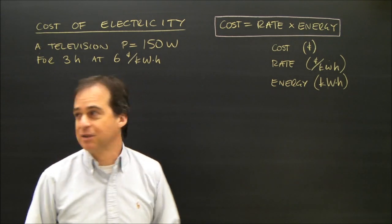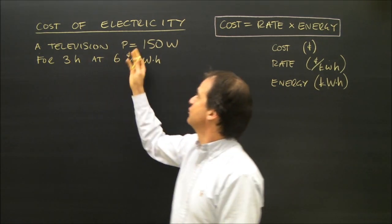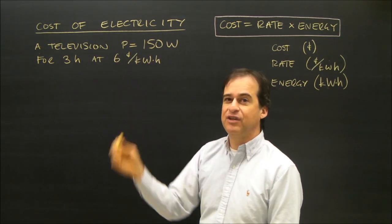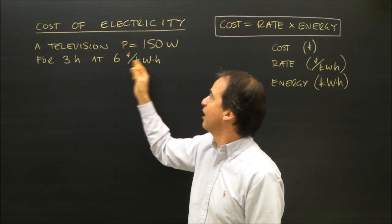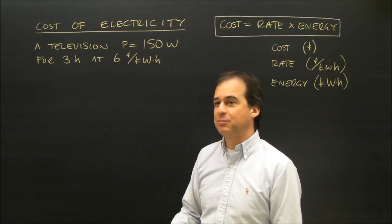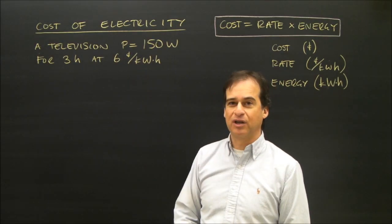So let's try and calculate something. I use a television in my house. The power on the back of the TV says it's a 150 watt television. I use it and watch TV for three hours, and the rate that I'm getting supplied for my electricity is six cents per kilowatt hour.